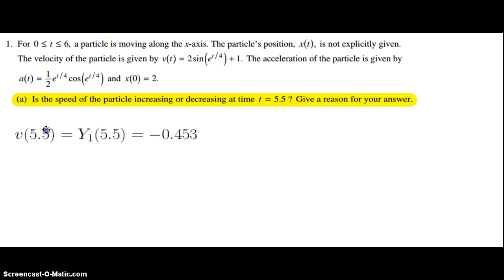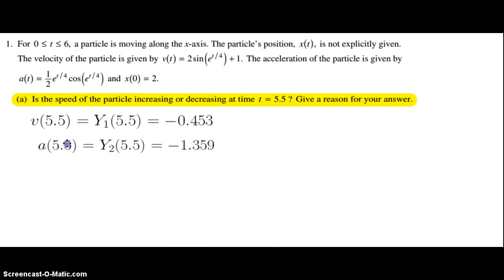First, we do v(5.5), which is y1 of 5.5 in my calculator. I evaluate that and get a value of negative 0.453. Then we evaluate a(5.5), which is y2 in my calculator, and I get a value of negative 1.359.